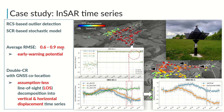Using double corner reflectors with co-located GNSS, one can get an assumption-less decomposition of line-of-sight displacement time series into the vertical and horizontal displacement time series, which is especially important to correctly interpret the landslide movement.